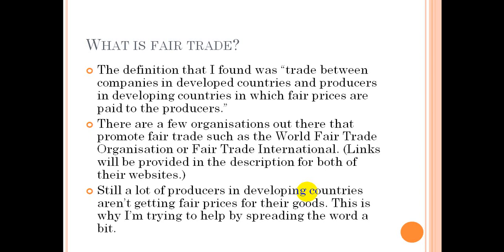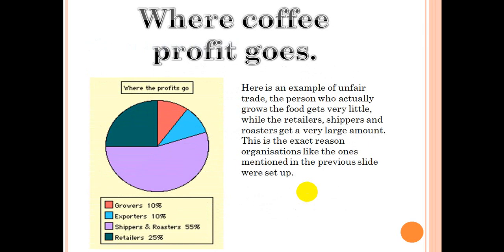Still, a lot of producers in developing countries aren't getting fair prices for their goods. This is why I am trying to help by spreading the word a bit. This slide is called 'Where Coffee Profit Goes' — here is an example of unfair trade. The person who actually grows the food gets very little, while the retailers, shippers, and roasters get a very large amount. This is the exact reason organisations like the ones mentioned in the previous slide were set up.